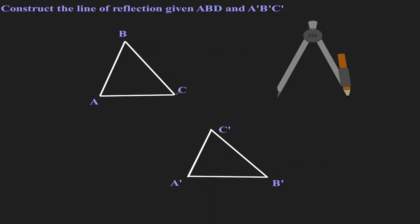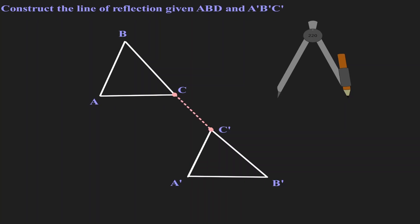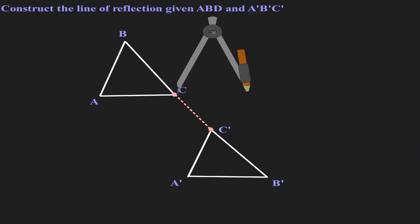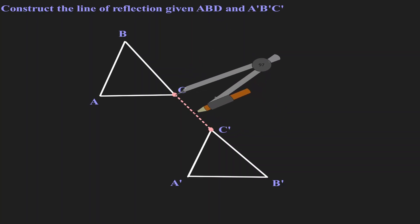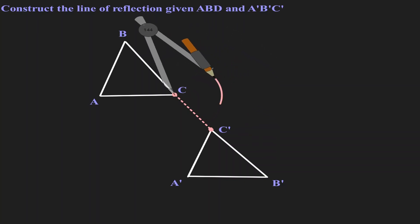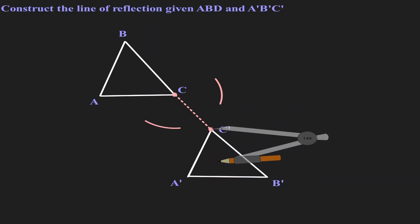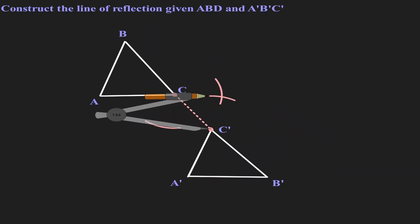Let's concentrate on point C. Let's start by connecting the image and the pre-image. Now let's create a perpendicular bisector on the line C, C'. Let's place our metal leg on C and find more than half the distance from C to C'. This is about half, so let's find more than half. Let's create a mark on the top and a mark on the bottom. Without changing the length of my compass, now let's move the metal leg to C' and look for that intersection on the top and on the bottom.